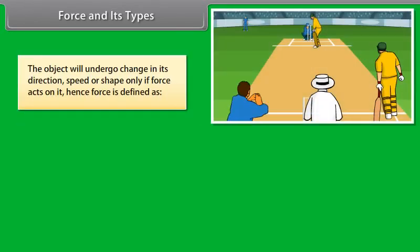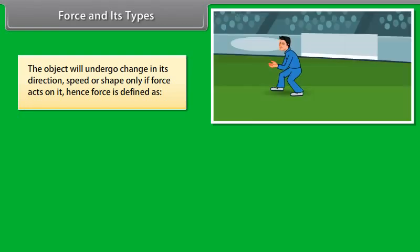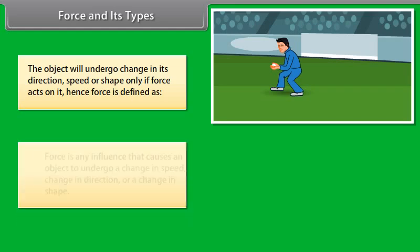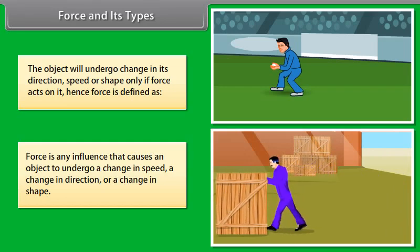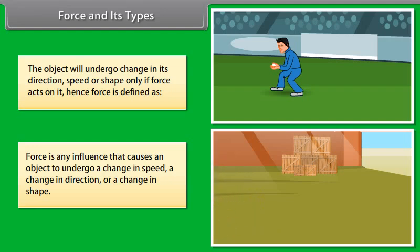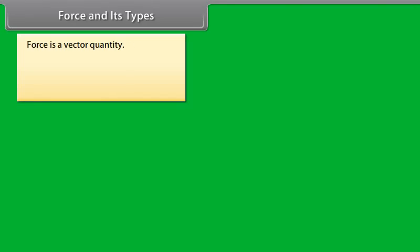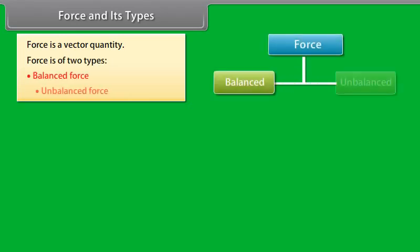The object will undergo change in its direction, speed, or shape only if force acts on it. Hence, force is defined as any influence that causes an object to undergo a change in speed, a change in direction, or a change in shape. Force is a vector quantity and is of two types: balanced and unbalanced.